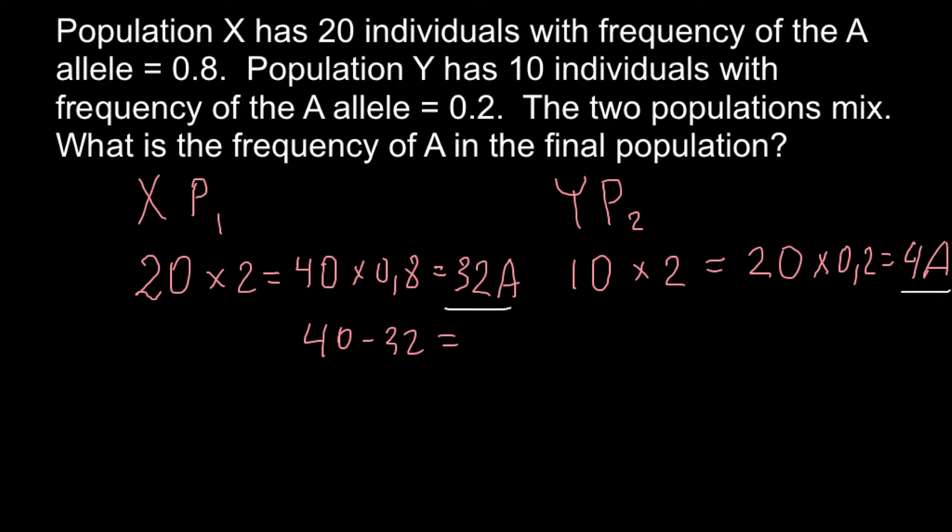So this is going to be 8 small a alleles. And in this population, we are going to get 20 minus 4. So this is going to be 16 small a alleles.